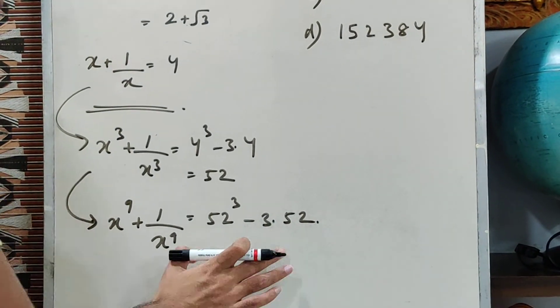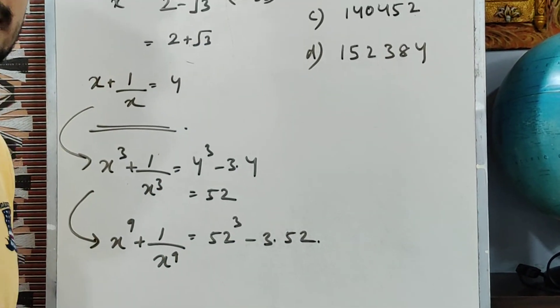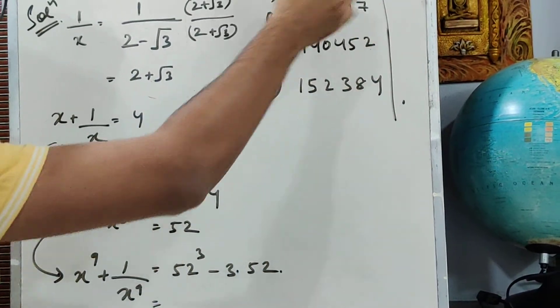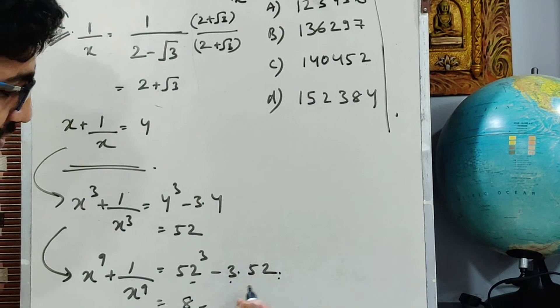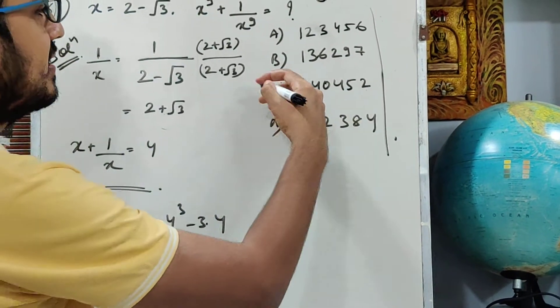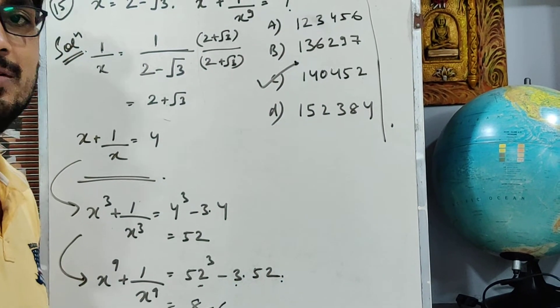99% students will use calculator to solve this value. Only the top 1 percentile students will simply say that all four options have different unit digits. Let's calculate: 2 cube is 8, minus 3 into 2 is 6. So unit digit has to be 2, so my answer has to be C. I do not need to check this. I can very well mark the answer within few seconds.